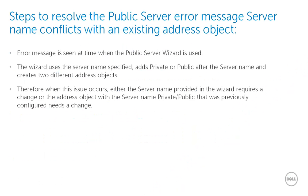At times, when you use the public server wizard to open certain ports, you may see the error: server name conflicts with an existing address object. When you navigate to the network address objects page, you may not see the same address object listed there.